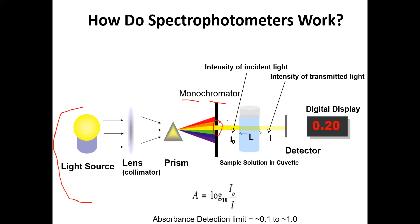This specific light then hits the sample, which is present in a cuvette — our samples will always be in a cuvette. The machine then compares the light that passes through: I, the intensity of transmitted light, versus I0, the intensity of incident light that hits the sample.